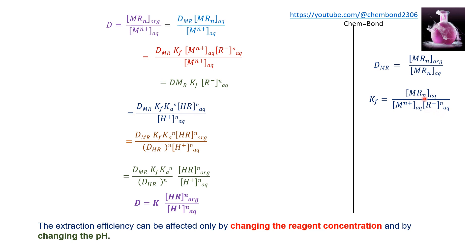Substituting all values gives D equal to D_chelate multiplied by KF multiplied by [M⁺] multiplied by [R⁻]ᴺ in the aqueous phase divided by [M⁺] in the aqueous phase. The metal ion terms cancel, leaving the distribution ratio equal to D_chelate multiplied by KF multiplied by [R⁻]ᴺ in the aqueous phase.